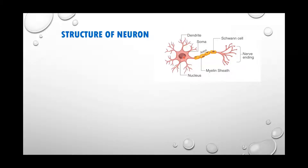The cell body has a nucleus — the entire thing is a cell. We know from earlier classes that the nucleus helps in cell division. In the neuron we see a dendrite, an axon, and it ends as a nerve ending. So what is the function of a dendrite?